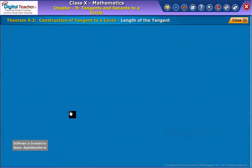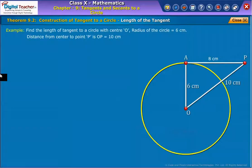To find the length of the tangent to a circle from a given point, take an example to prove it. Find the length of tangent to a circle with center O. Radius of the circle is equal to 6 cm. Distance from center to point P is OP equal to 10 cm. Given radius of the circle OA is equal to 6 cm.